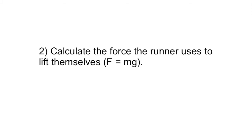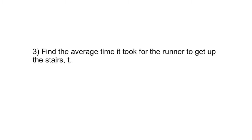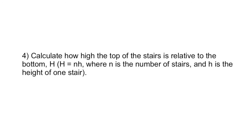Step two: Calculate the force the runner uses to lift themselves. Force equals mass times gravity (F = mg). Step three: Find the average time it took for the runner to get up the stairs (T). Step four: Calculate how high the top of the stairs is relative to the bottom, where H equals N times h — N is the number of stairs and h is the height of one stair.